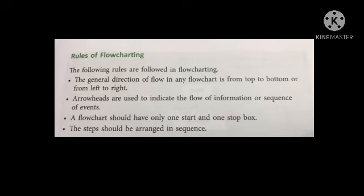These are simple rules of flow charting. The general direction of flow in any flow chart is from top to bottom or from left to right. Arrowheads are used to indicate the flow of information or sequence of events. A flow chart should have only one start and one stop box. The steps should be arranged in sequence.